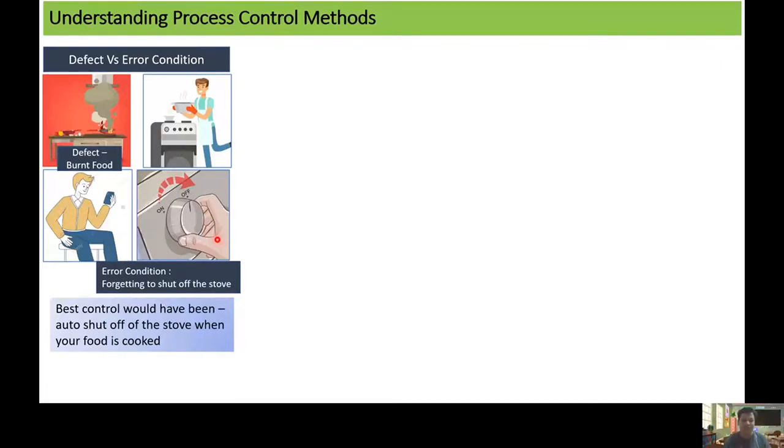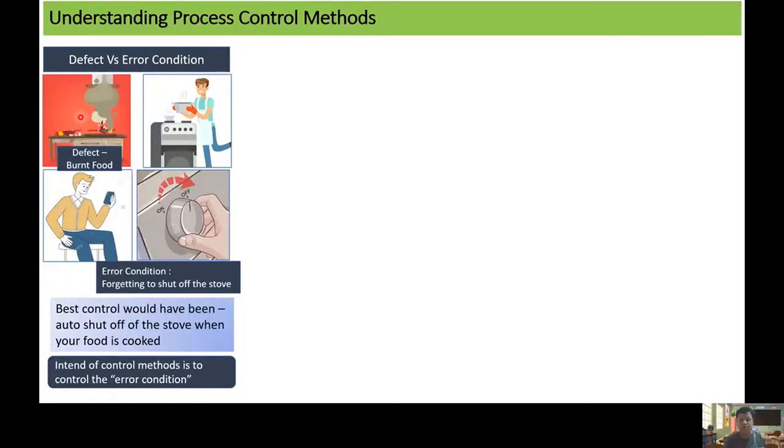So if this was the case, then the error condition is being removed and the defect of burning food would have been avoided. The intention of control method is to control the error condition and not correcting the defect. I hope this concept of defect versus error condition is clear to you. So now let's move into the next phase of the video.